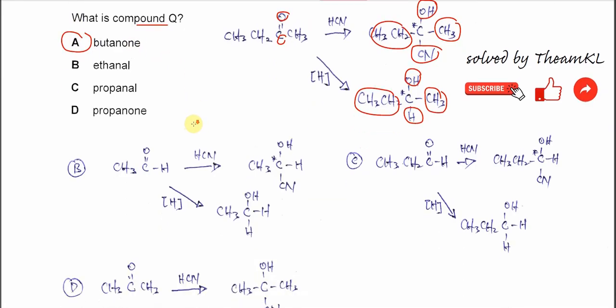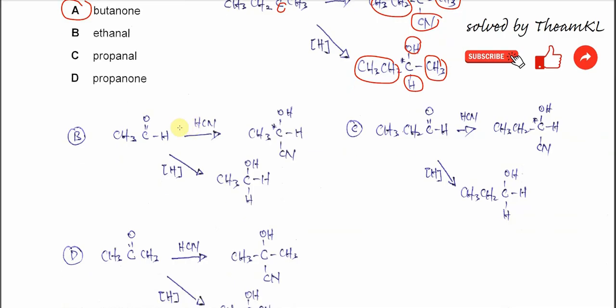Why B cannot. Ethanal - if we use HCN and add it to this ethanal, it will form this cyanohydrin as well, and this one also has one chiral center.